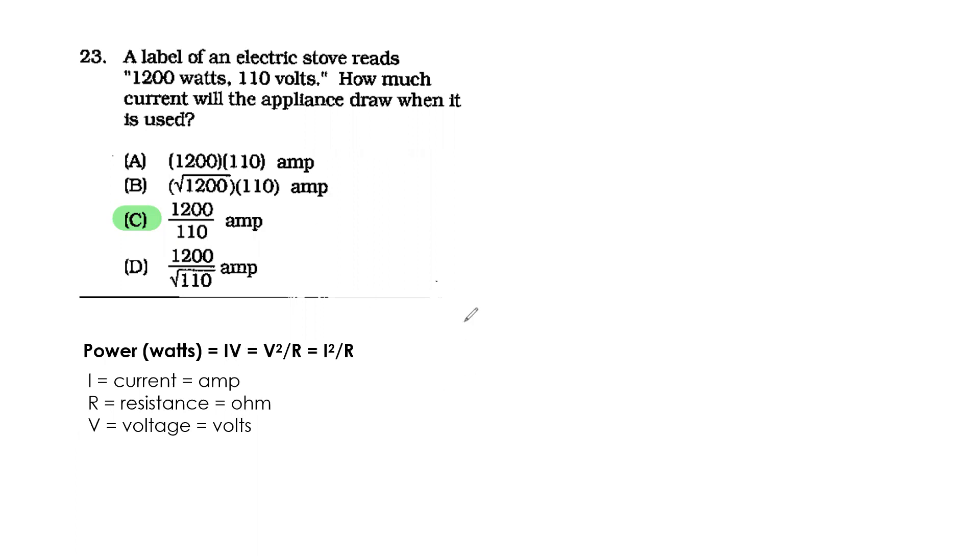I remember formulas like this using a triangle—P at the top, I and V at the bottom. If you're looking for I, you see P over V. If you're looking for V, it's P over I. If you're looking for P, multiply I and V. Maybe that works for you too.